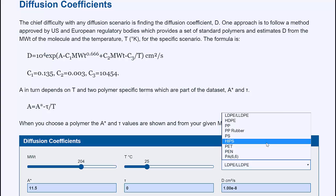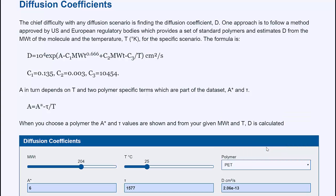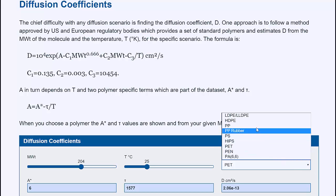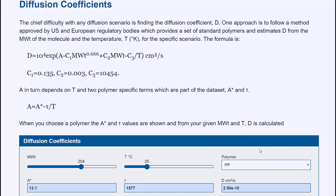If we go to PET, the diffusion coefficient for the same molecule at the same temperature isn't 10 to the minus 8, it's 10 to the minus 13. That's why PET barriers are so much better than PE in many cases. If we go to PP, it's 2.5 times 10 to the minus 10. If we increase the temperature, then the diffusion coefficient goes up.